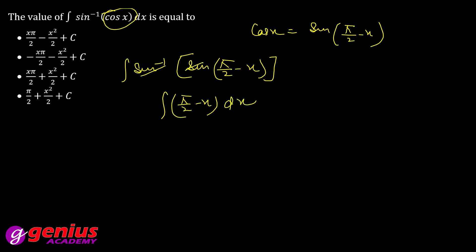Now you have to integrate. Pi by 2 is constant term. So what will happen? Integrate pi by 2 times 1 dx minus x dx. So pi by 2 into x minus x squared by 2 plus c. This is your final answer.